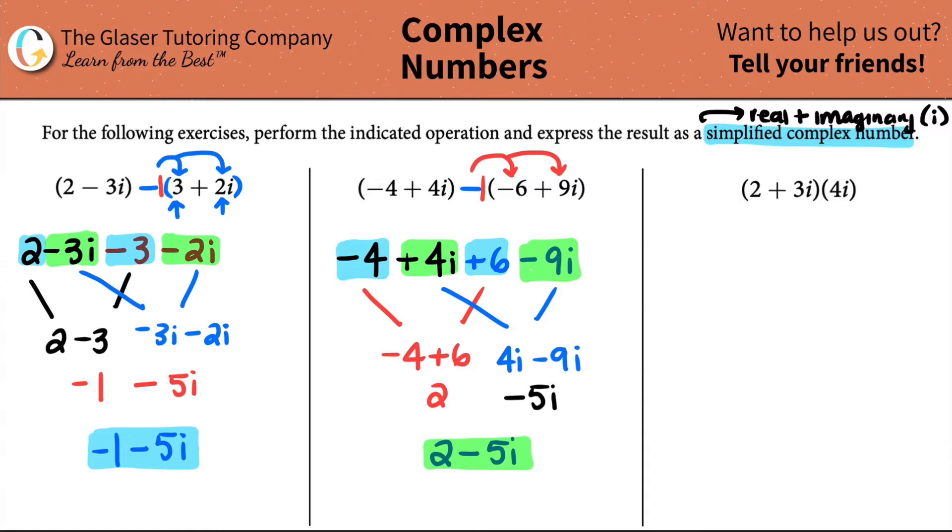What happens is the first term, the two, wants to be multiplied by that second parentheses, but you got to be fair. If you multiply the first term, you got to multiply the second term by the same guy. That's what happens when you multiply two parentheses together. Everybody has to get multiplied. They all got to play fair. So let's do the first part. Two times a four i is just an eight i, and then three i times four i.